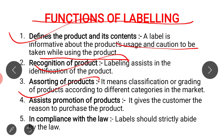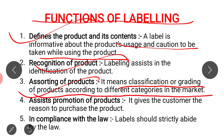Another function of labeling is that it helps in the assorting of products — meaning labeling helps in classifying and grading products according to different categories in the market. A particular product can be divided into different categories in the market, and labeling helps classify these different categories. For example, shampoos are categorized as for dry hair, normal hair, and oily hair. Customers with dry, normal, or oily scalps can classify and choose their product accordingly with the help of the label only.